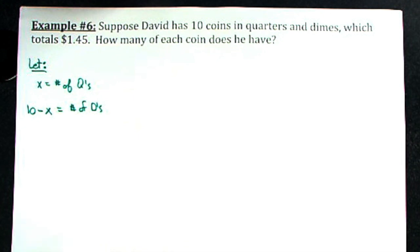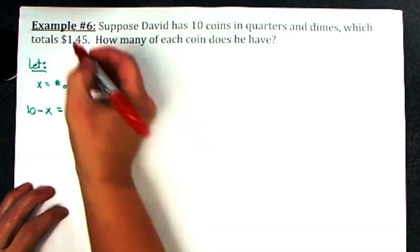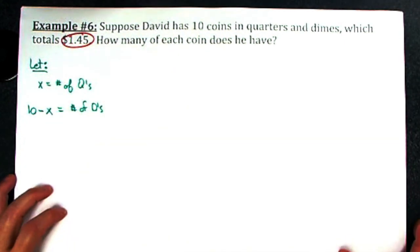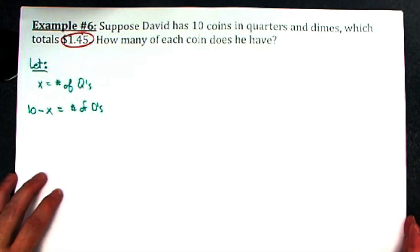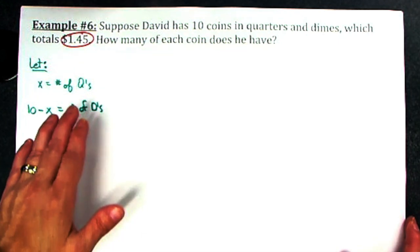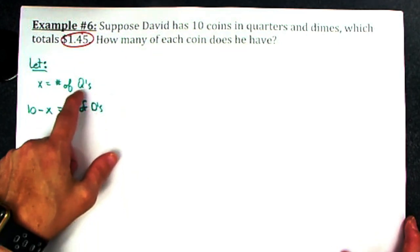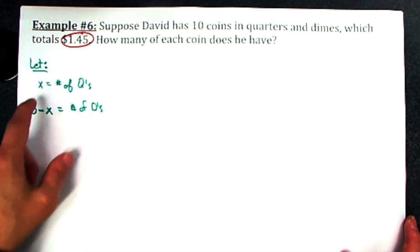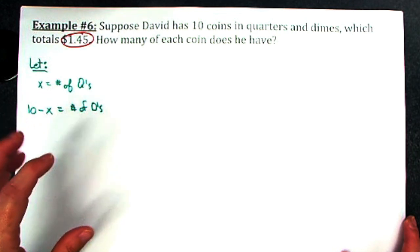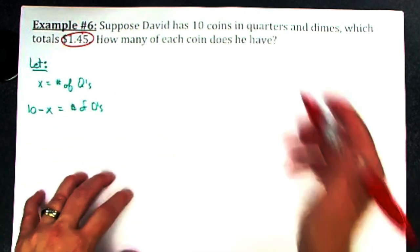Now this is where you gotta think outside the box a little bit. They've given me a dollar and 45 cents that is referring to money, so I can't think of these as just plain quarters and dimes.